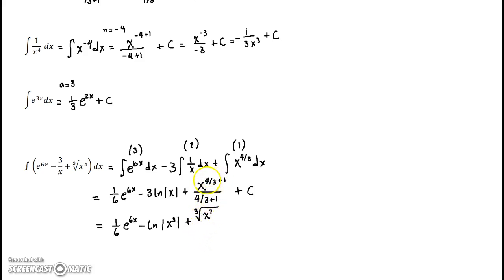That is just adding 4 thirds plus 1 equals 7 thirds. So this is x to the 7 thirds, and this gives me divided by 7 thirds plus C. And I can lastly multiply the whole thing. Instead of dividing by 7 thirds, multiply it by 3 sevenths. And we get copy this guy, copy this guy, copy this guy, and then I get 3 sevenths and then the cubic root x to the 7 plus C.